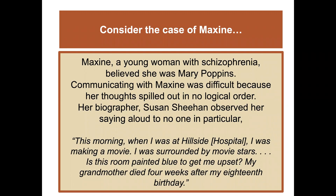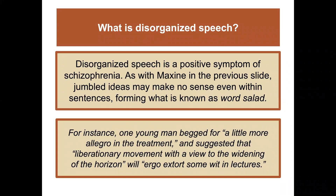Consider this case: Maxine, a young woman with schizophrenia, believed she was Mary Poppins. Communicating with her was difficult because her thoughts spilled out in no logical order. Her biographer Susan Sheehan observed her saying aloud: 'This morning when I was at Hillsdale Hospital, I was making a movie. I was surrounded by movie stars. Is this room painted blue to get me upset? My grandmother died four weeks after my 18th birthday.' Disorganized speech like this is a positive symptom of schizophrenia. Jumbled ideas that make no sense, even within sentences, form what psychology calls a word salad. One young man begged for 'a little more allegro in the treatment' and suggested that 'liberationary movement with a view to the widening of the horizon will ergo extort some wit in lectures' — none of which makes any sense.